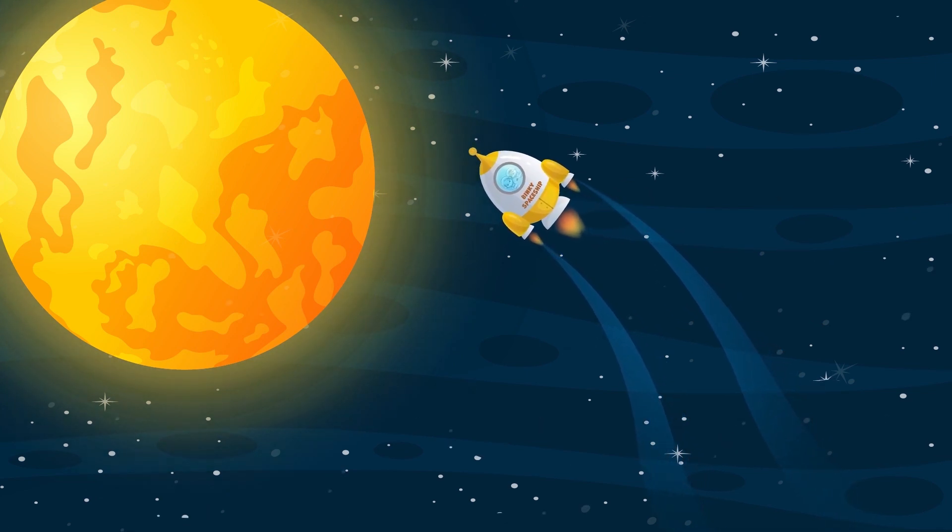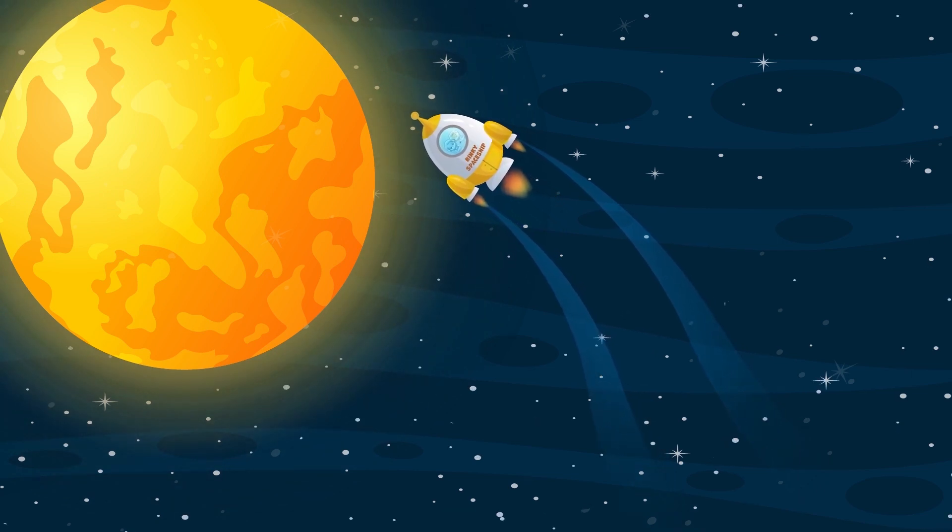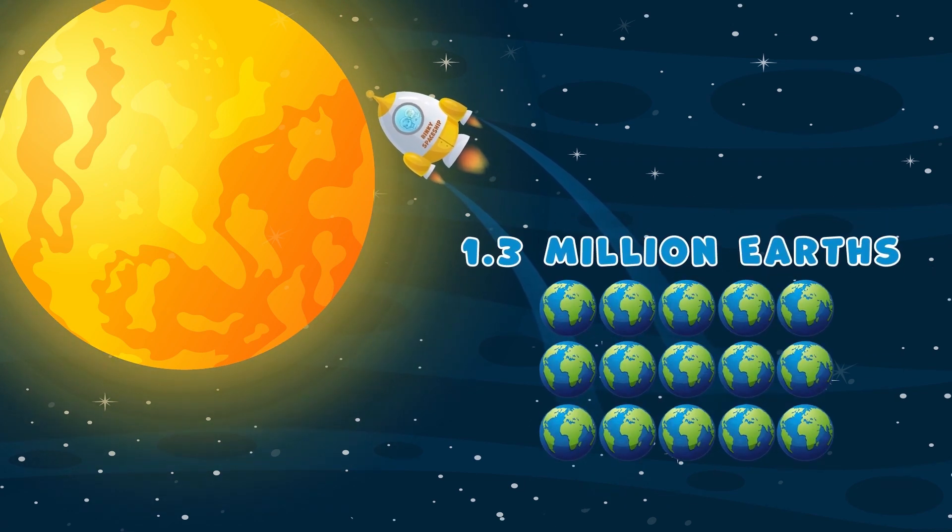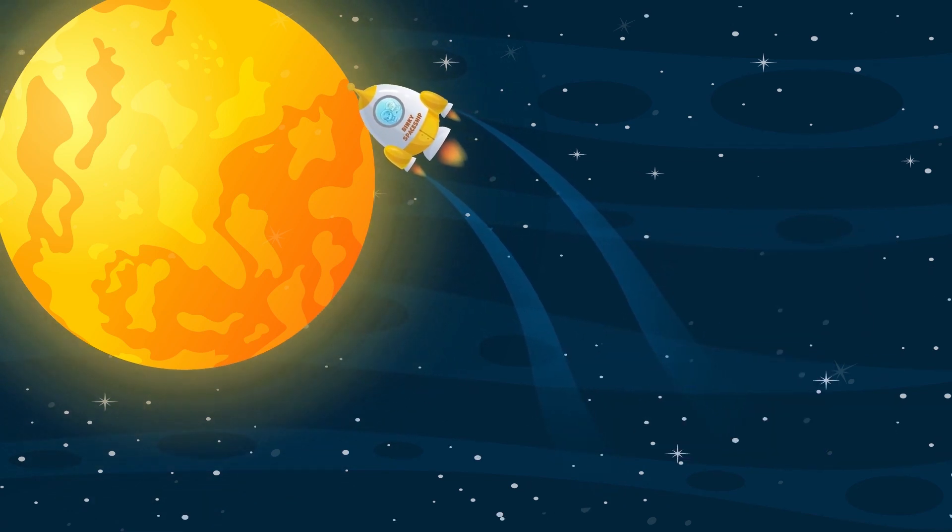Without the Sun's energy, there would be no life on Earth. The Sun is so big that it could fit about 1.3 million Earths.